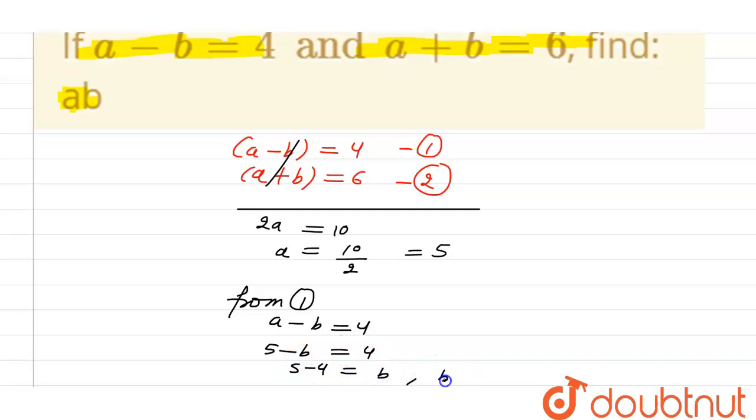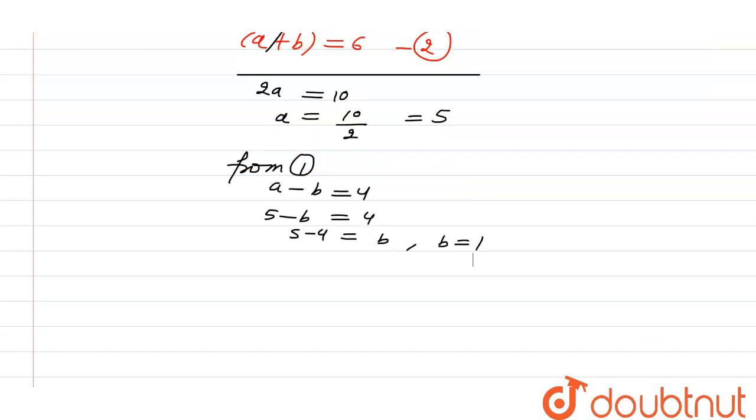So now we can calculate the value of ab from here. The value of ab is a times b. The value of a is 5 and value of b is 1, which is equal to 5.